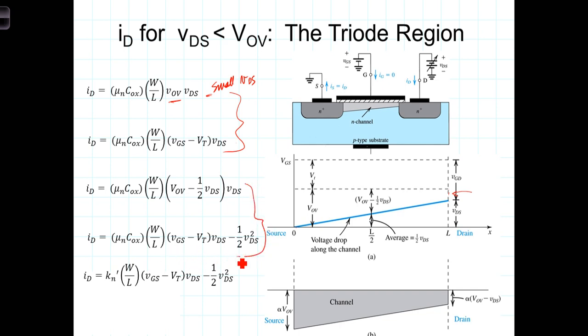So these two equations are basically, they are the same equation, just explicitly showing VOV in terms of VGS minus VT. Finally, this equation here, we replace Mu sub N COx with the K sub N prime term, and we have this equation, which describes current flow in what we now are going to refer to as the triode region.